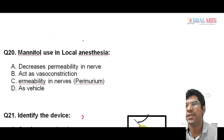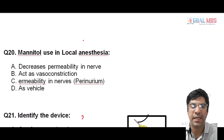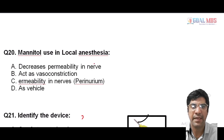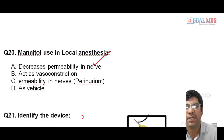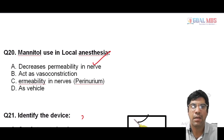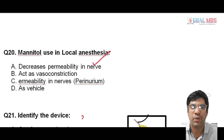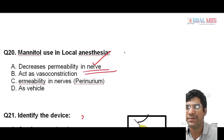The mannitol used in local anesthesia: the answer is that it decreases the permeability in the nerves. Mannitol is not a common component of local anesthetic solution — it is primarily used in neuroanesthesia to reduce intracranial pressure through its osmotic action and vasoconstrictive properties. Its main role is decreasing permeability in the nerves.